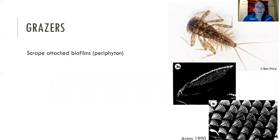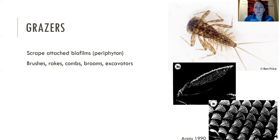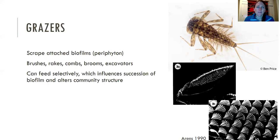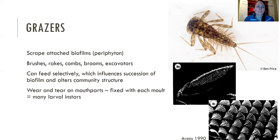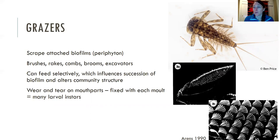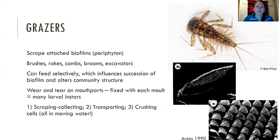Moving on to grazers. Grazers tend to scrape attached biofilm, so periphyton. They tend to have brushes, rakes, and combs — sometimes brooms or excavators. They can often feed selectively, which can influence the succession of the biofilm and alter community structure. Because they're scraping the rock surface, there's a lot of wear and tear on mouth parts, but each time they molt at each instar stage, they come out with bright, shiny, sharp mouth parts again. The steps are really: scrape, collect, transport, and then crush.